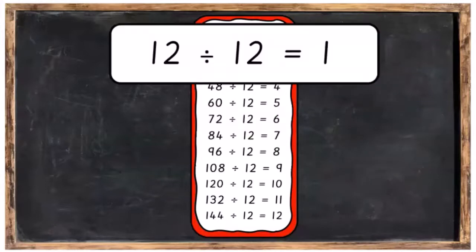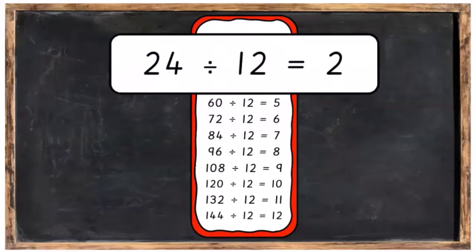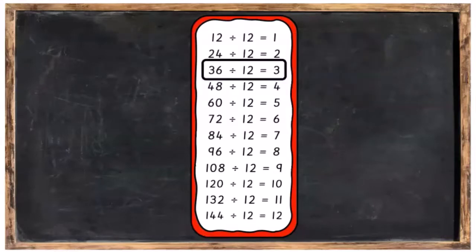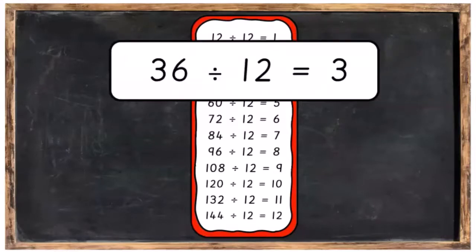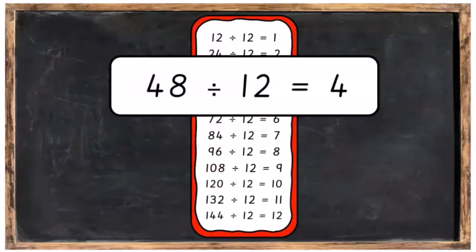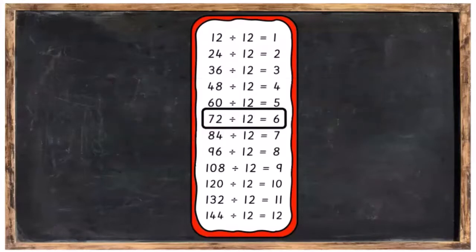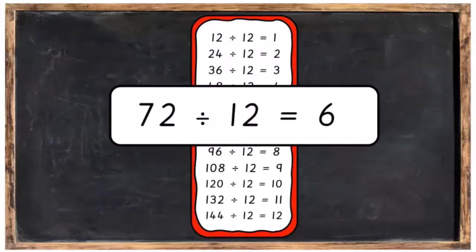12 into 12 goes once. 12 into 24 goes twice. 12 into 36 goes 3 times. 12 into 48 goes 4 times. 12 into 60 goes 5 times.